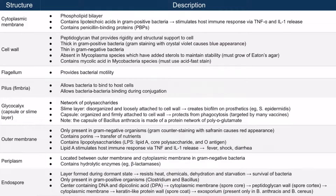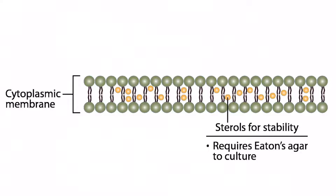It's important to recognize that the cell wall is actually absent in Mycoplasma species. This is strange because the cell wall is responsible for rigidity and support of the cell. So how do Mycoplasma species survive without it? Well, they have sterols, which are embedded in their cytoplasmic membrane, and they give it the stability that it needs.